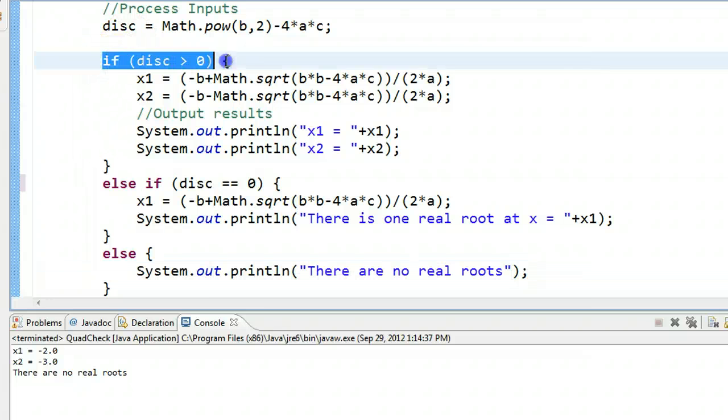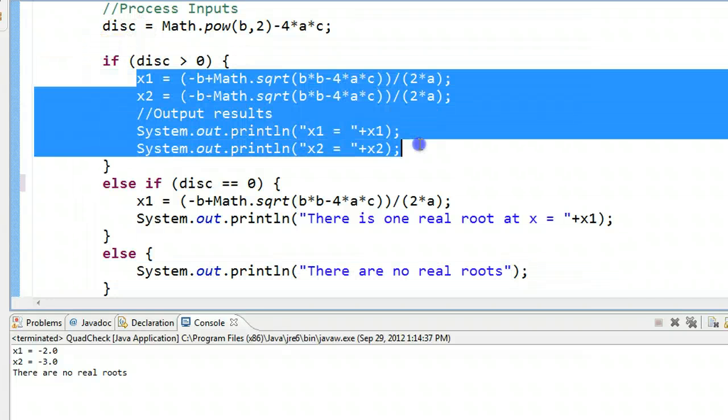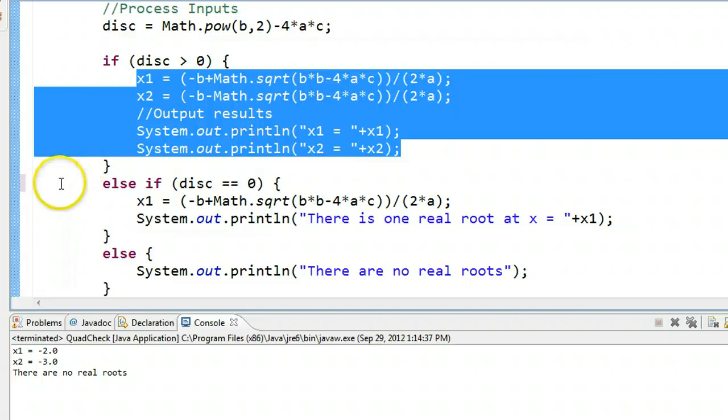However, if this statement passes, it's going to execute the code associated with it and then jump down past the else. So if I run this now, my program works perfectly.